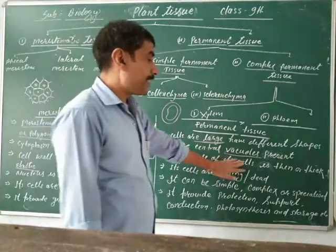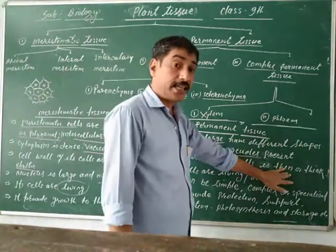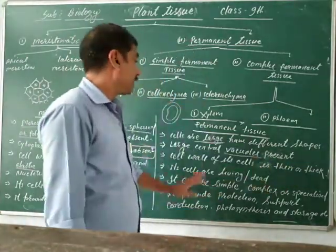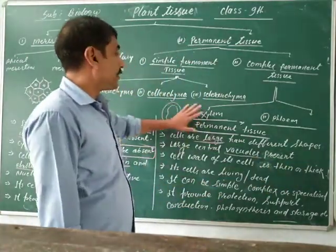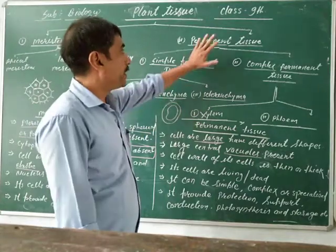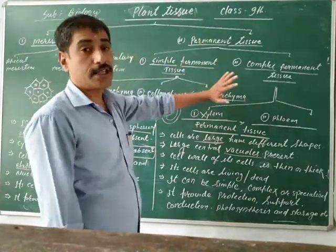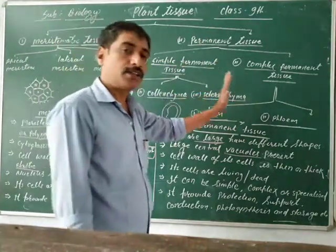The cell wall of its cells can be thin or thick, depending on the type of permanent tissue.